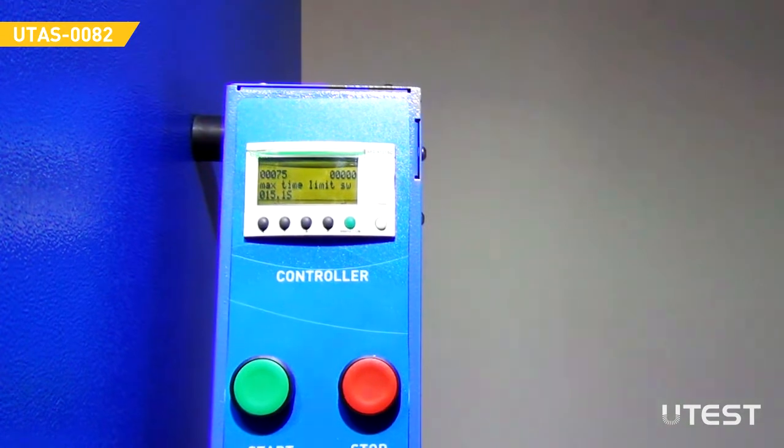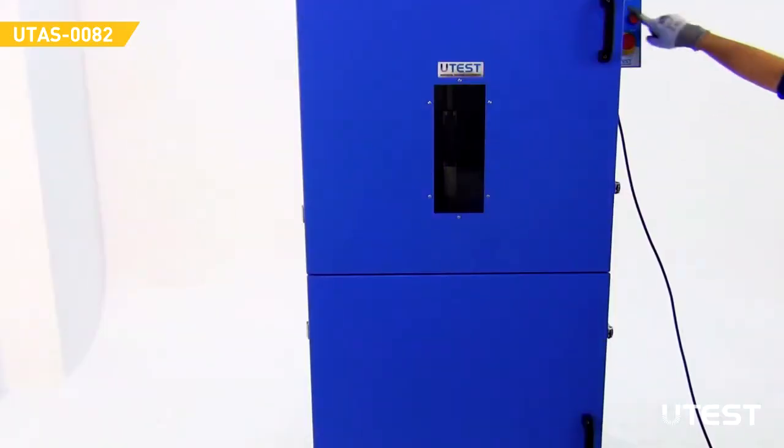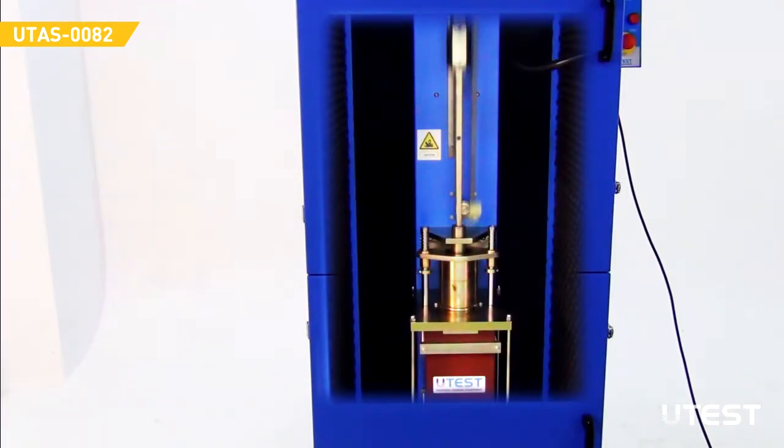The menus in the control unit are for the UTEST technical service use. Therefore, do not change the parameters under these sub-menus. Press the start button to initialize the compaction. The device will stop automatically after reaching the entered drop number.